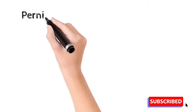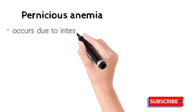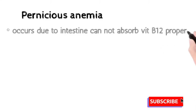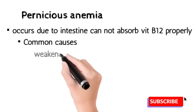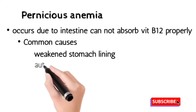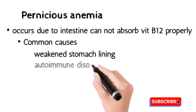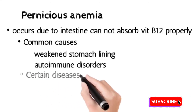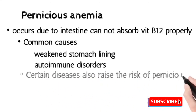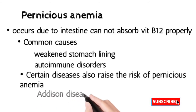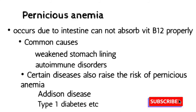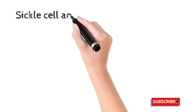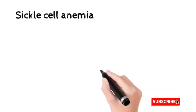Pernicious anemia occurs due to intestinal abnormality, where the intestine cannot absorb vitamin B12 properly from the diet. Common causes are a weakened stomach and autoimmune disorders, during which the body starts destroying its own cells. Certain diseases also raise the risk of pernicious anemia, including Addison's disease and type 1 diabetes mellitus.